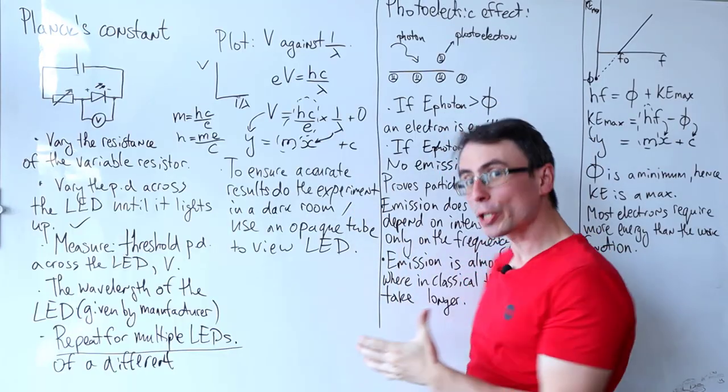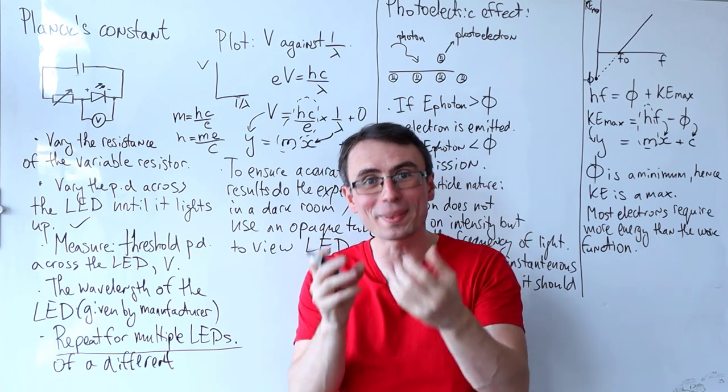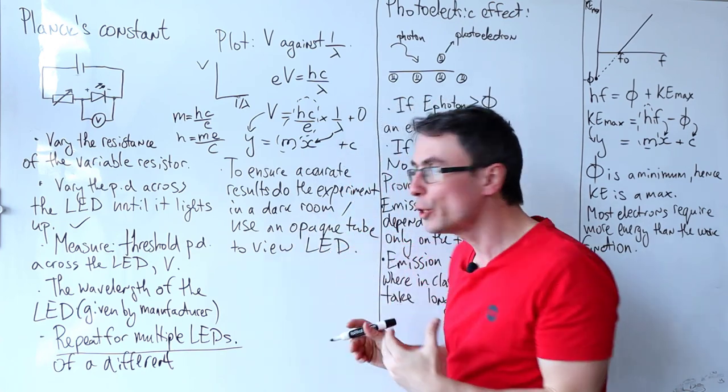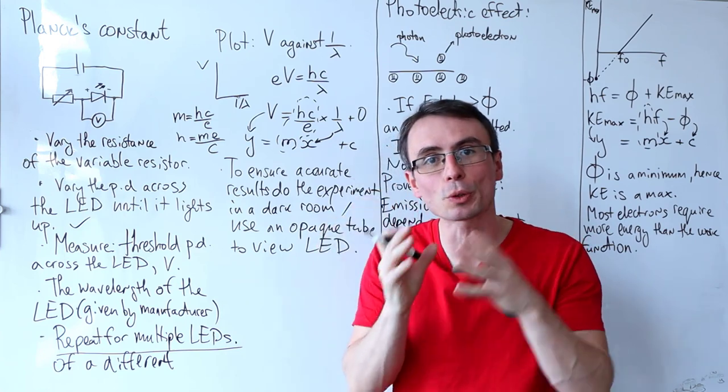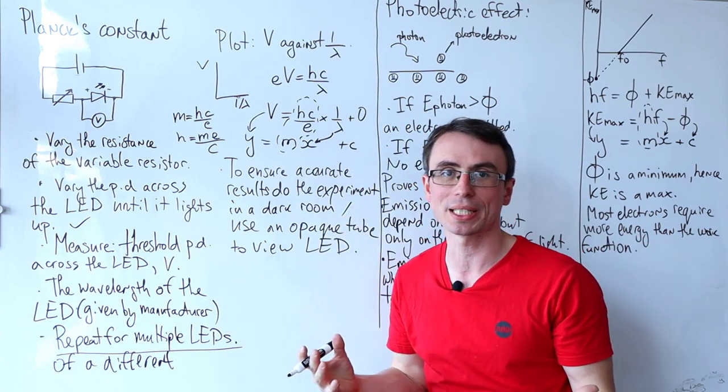Now to ensure accurate results in this experiment, we need to make sure that we perform this in a dark room or we can use an opaque tube to actually look into the LED and block all the ambient light.